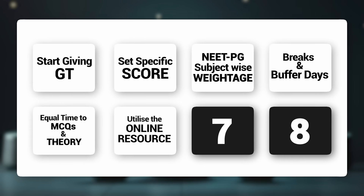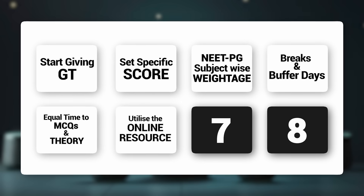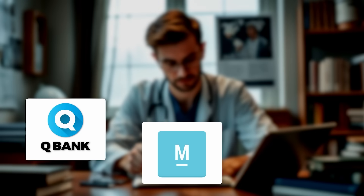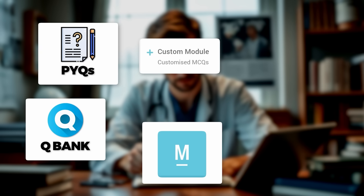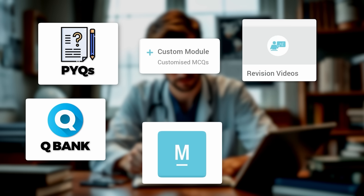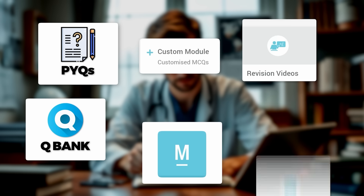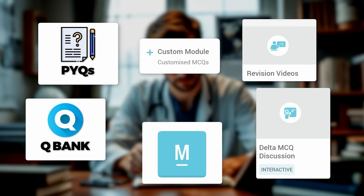Utilization of your online resources should be done properly — trust your resource and complete it in its entirety. For Marrow, try to complete the question bank; at minimum do PYQs and custom modules from each topic. Secondly, do the revision videos. Thirdly, do the MCQ discussion videos, which are a goldmine for NEET PG students. There were three to four questions I would not have gotten correct without watching the MCQ discussion videos of Marrow — they are a really good resource.